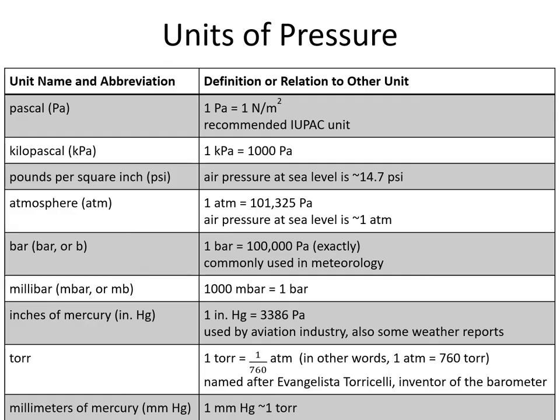There are a lot of different units for pressure. The Pascal is the official IUPAC unit and is equal to one newton per meter squared. Newton is a unit of force and meter squared is a unit of area, so newton per meter squared is force per area. The kilopascal is a similar version — it's just a thousand pascals.